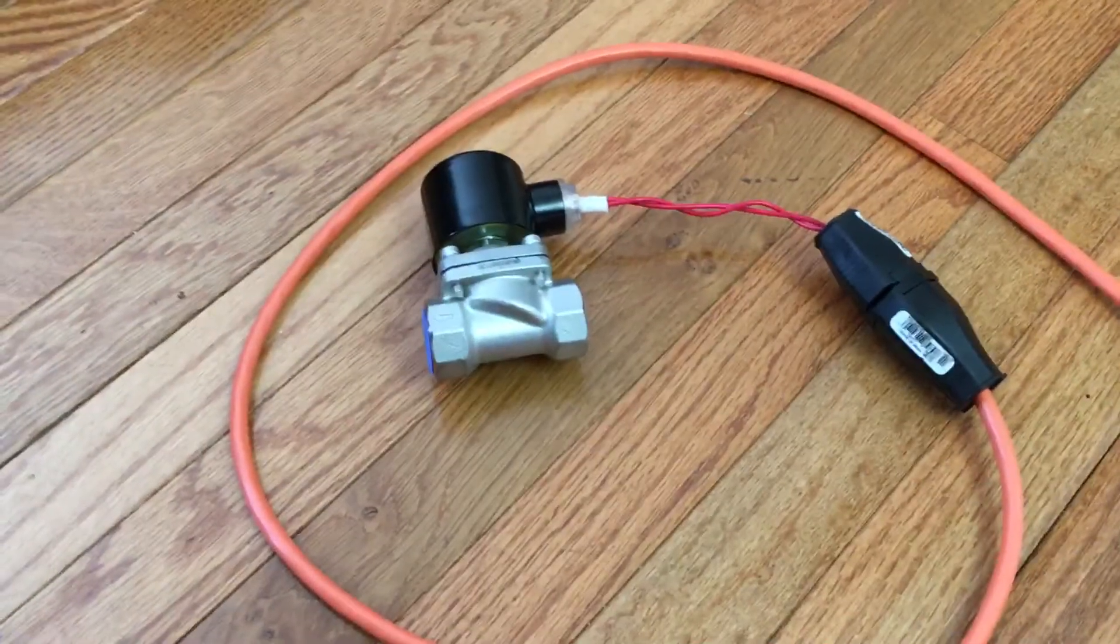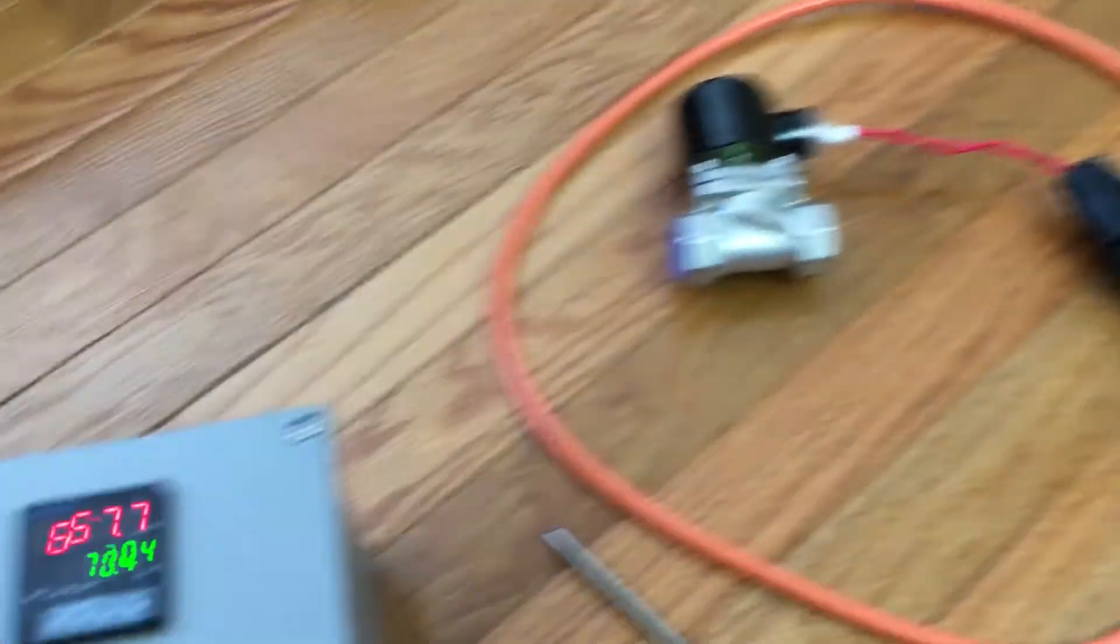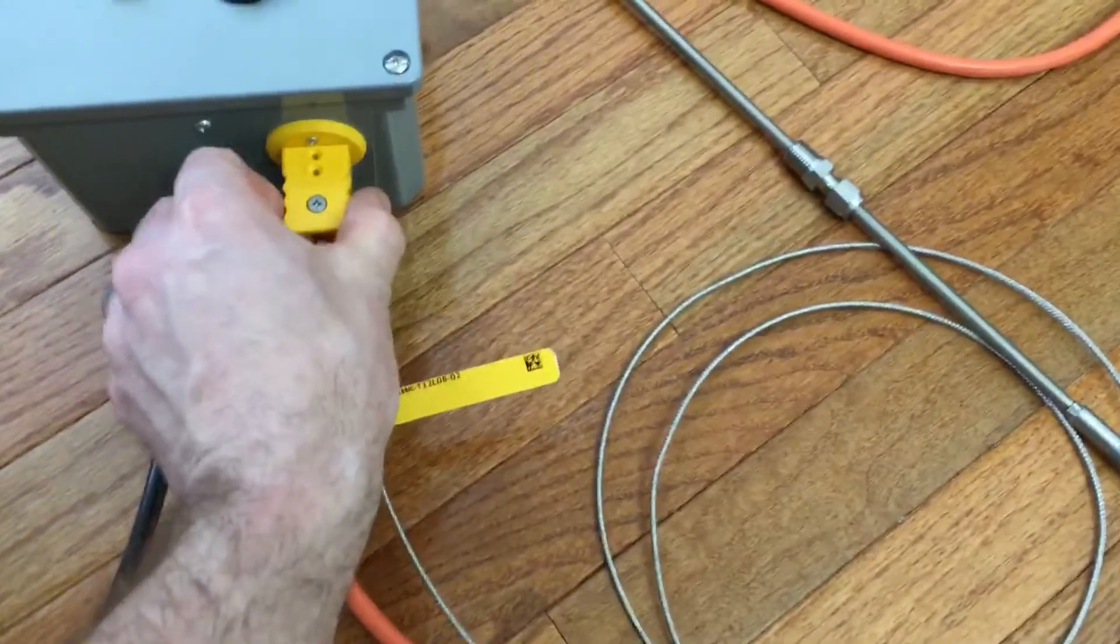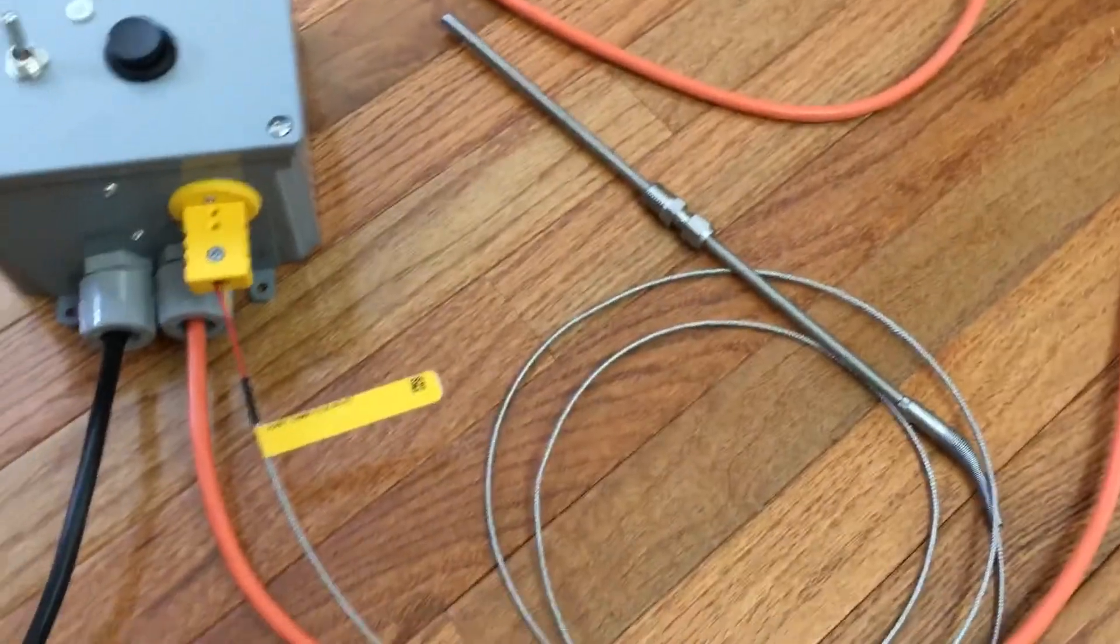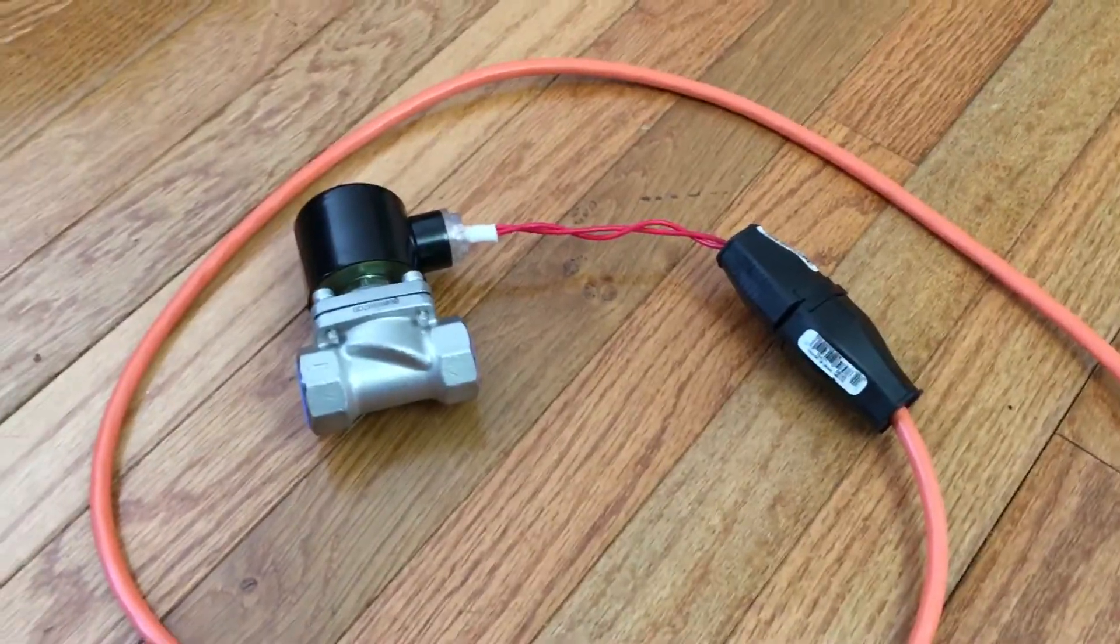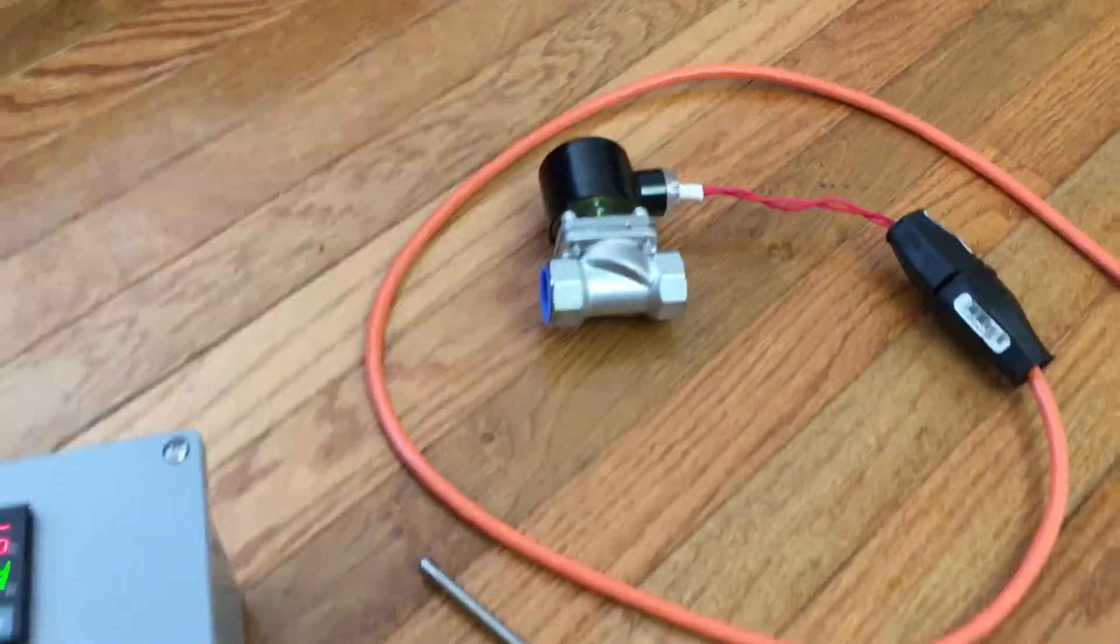There's a 120 volt electric solenoid valve and then the control box. The temperature probe can be unplugged for storage or for cleaning, and the same with the valve. It can be unplugged there and then taken into the house to be cleaned.